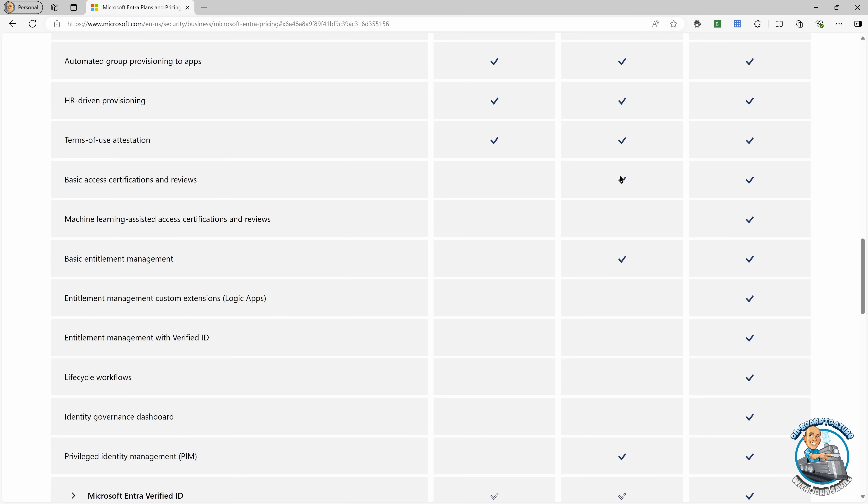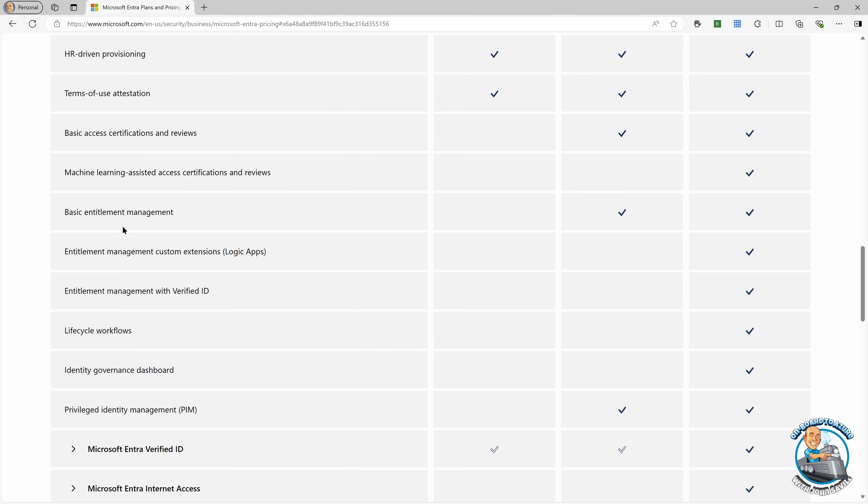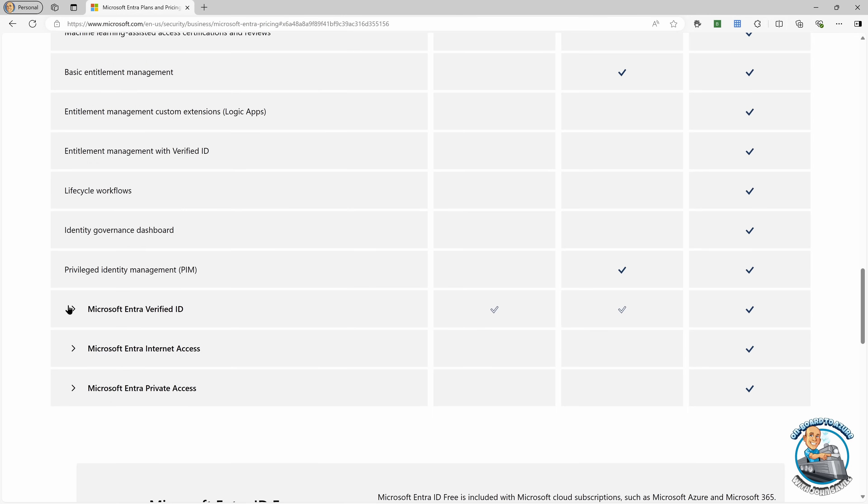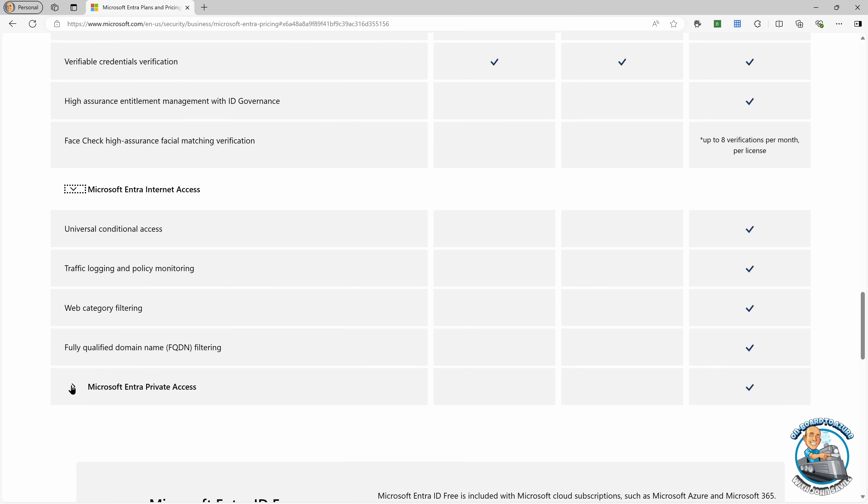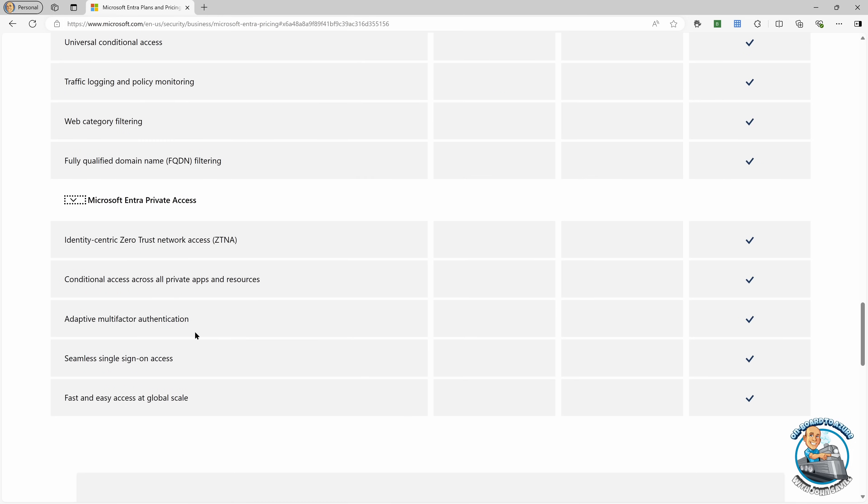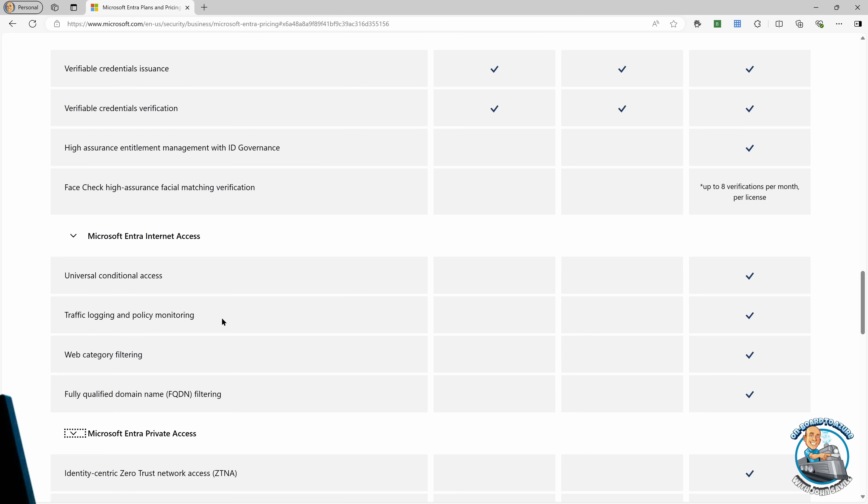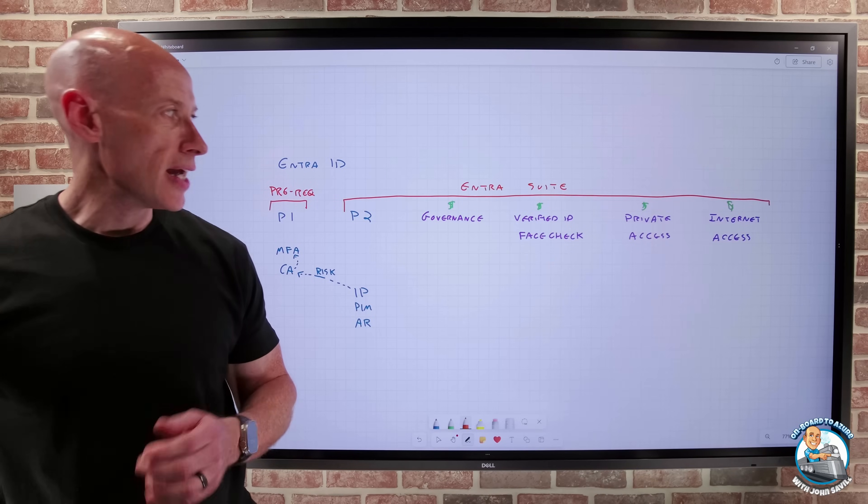So it's including, yes, all the P2 governance features, but then also these advanced things such as those entitlement management custom extensions, such as that integration with verified ID, the lifecycle workflows, PIM, the dashboard, all of the verified ID functionalities, the face check capabilities, and then all of the ENTRA internet access and all of the ENTRA private access. So it's all of those things as part of the ENTRA suite.